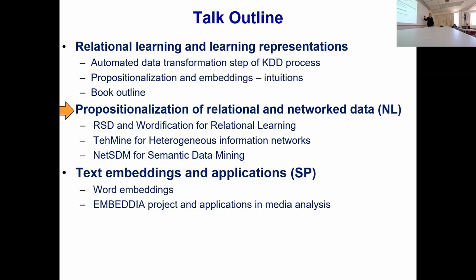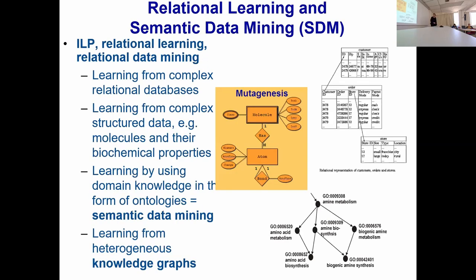In the rest of my part of the talk, I will illustrate three different technologies which use the trick of transforming data into feature vectors. These propositionalization techniques will be briefly outlined. Before going into the propositionalization of relational databases, I'd also like to mention semantic data mining — where in addition to the data, we take into account background knowledge in the form of ontologies or taxonomies. Recently we are also very much interested in learning from knowledge graphs, which are becoming omnipresent for representing knowledge in many domains.